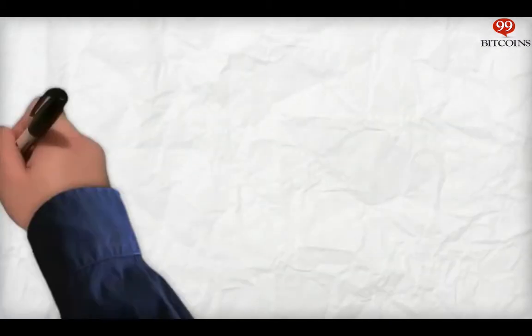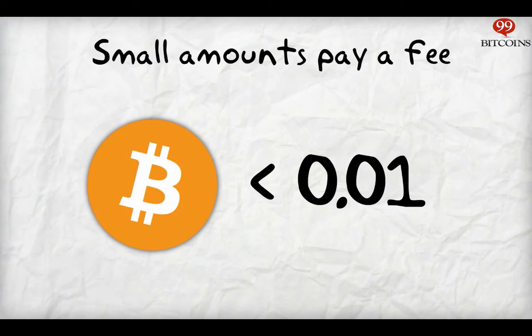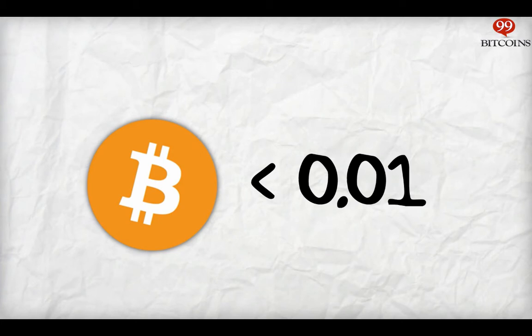Rule number one: smaller amounts pay a fee. If the number of Bitcoins you are sending is smaller than 0.01 Bitcoins, you'll be required to pay a miners fee. This fee is required in order to prevent users from spamming the network with microtransactions. Even if the whole transaction is more than 0.01 Bitcoins, but the change you get back from your inputs is more than 0.01 Bitcoins, you will need to pay a fee.